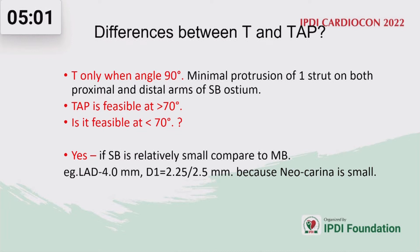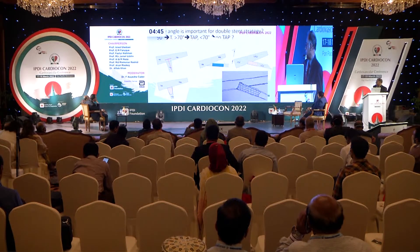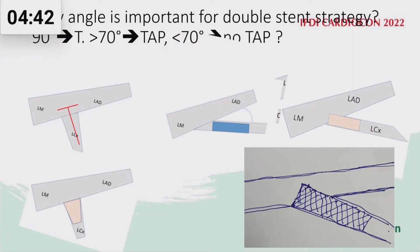But in certain circumstances it is possible. If there is a lesion in the LAD and diagonal — if the LAD is 4 mm and the diagonal is 2.25 or 2.5 mm, the LAD is a huge artery. In that circumstance, in the lower picture, if both LAD and diagonal are large and the angle is less than 70 degrees, TAP is not possible because the carina will be hugely elongated and will touch the opposite side of the main branch. But if it is a small branch, even with a less than 70 degree angle, it is possible to do the TAP. You will see it on the EBC website.